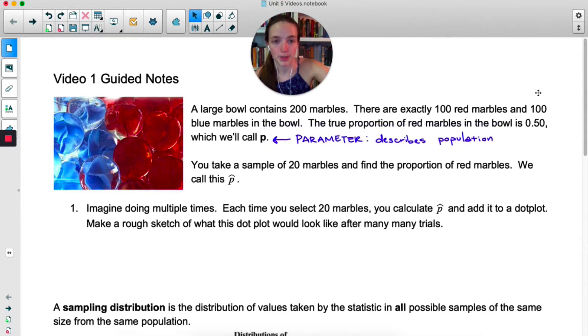This is an example of a parameter, and this is not a new vocab word, we've done this before. A parameter is anything that describes the population. So here's a couple examples we've seen already. Mu describes the mean of the population. We also have p, which is a proportion that describes the population, and we have sigma, which is a standard deviation from the entire population.